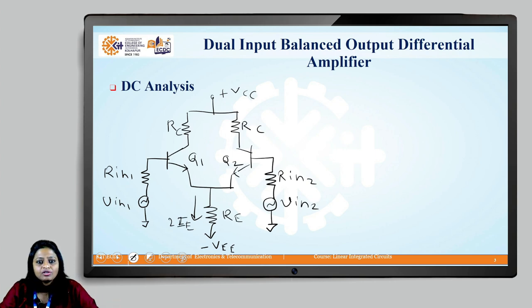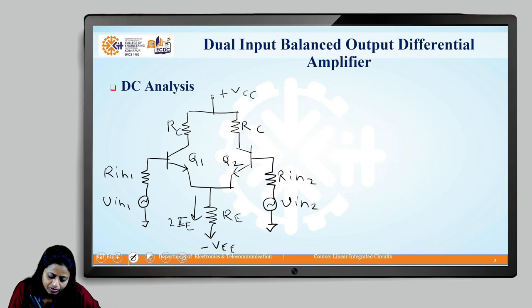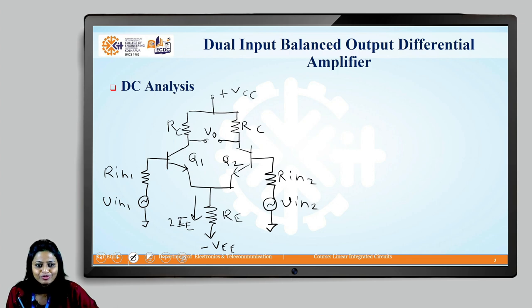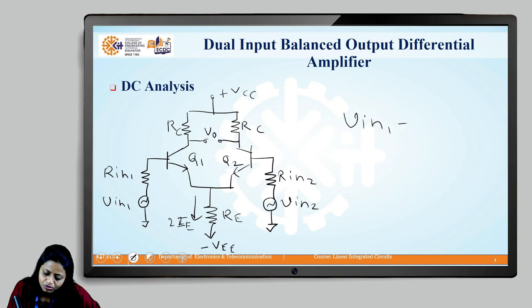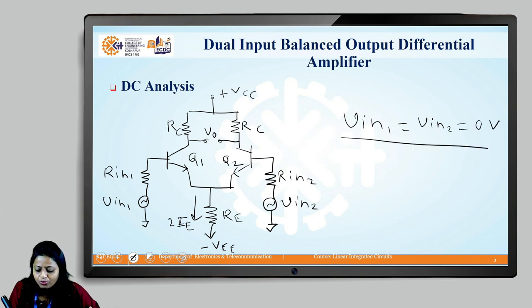This is the dual input balanced output differential amplifier. The output will be measured across the two collector terminals of these two transistors. The input has been applied to both of the base terminals of the transistors Q1 and Q2. Hence, it is a dual input balanced output differential amplifier. In order to perform the DC analysis, to calculate the collector current and collector to emitter voltage, we have to reduce the input voltages to 0. Now we will draw the circuit with this.